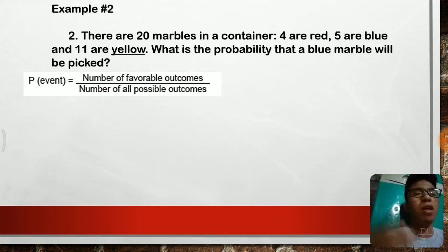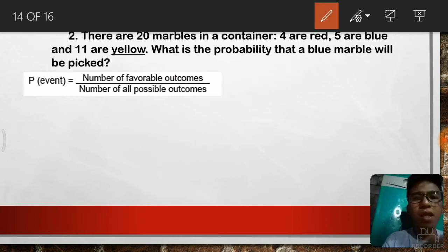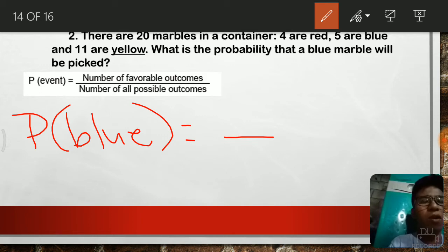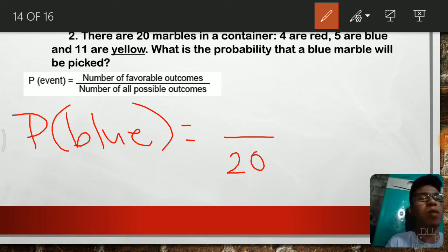It is already declared that we have 20 marbles in the container. So, meaning in this problem, our event is to get the probability of getting a blue marble. Since there are 20 marbles in a container, that will serve as our denominator, or the number of all possible outcomes.